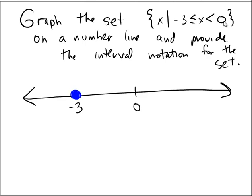The number 0 is not included — it says less than 0, so all the x's up to but not quite including 0. The way that we denote this is to use an open dot. So there's an open dot located at 0. All the numbers from negative 3 to 0 — notice that x is in between those two, so we want to shade the numbers that are in between those two dots.